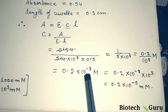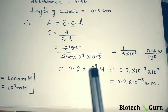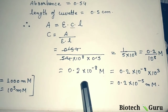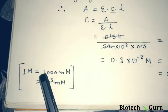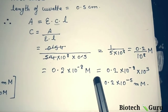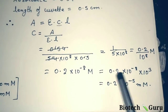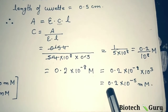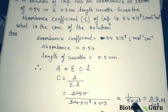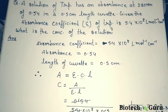So the answer is 0.2 × 10⁻⁸ mole. Sometimes options may give the answer in moles, or sometimes in millimoles. If the answer is required in moles, this is correct. But if the answer is required in millimoles, you need to convert. Since 1 mole = 1000 millimoles, we multiply by 10³, and we get 0.2 × 10⁻⁵ millimoles. I hope your answer also came out the same. Now let us start the main topic of this video, that is organic chemistry.